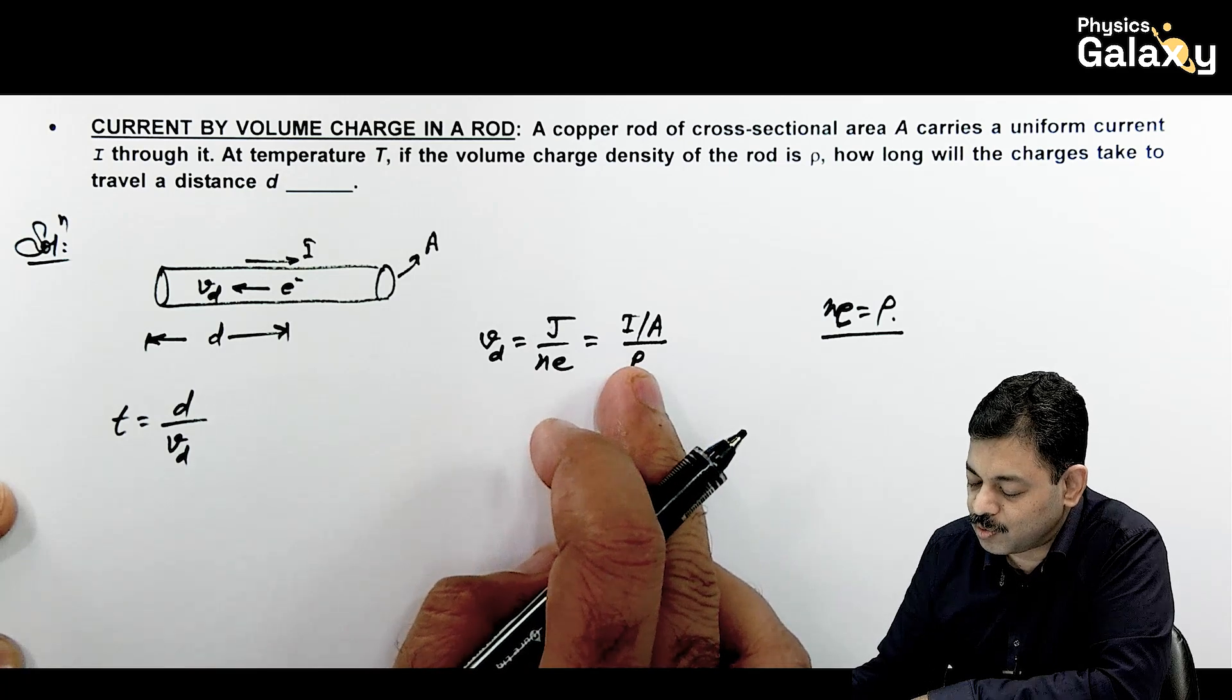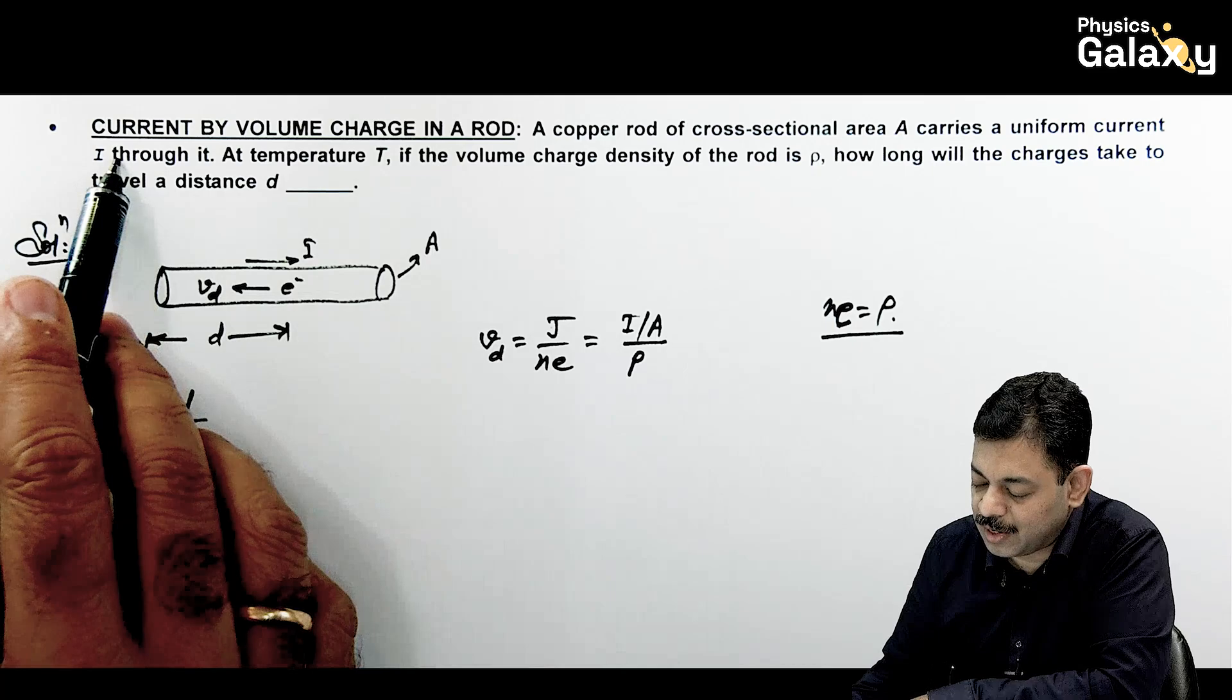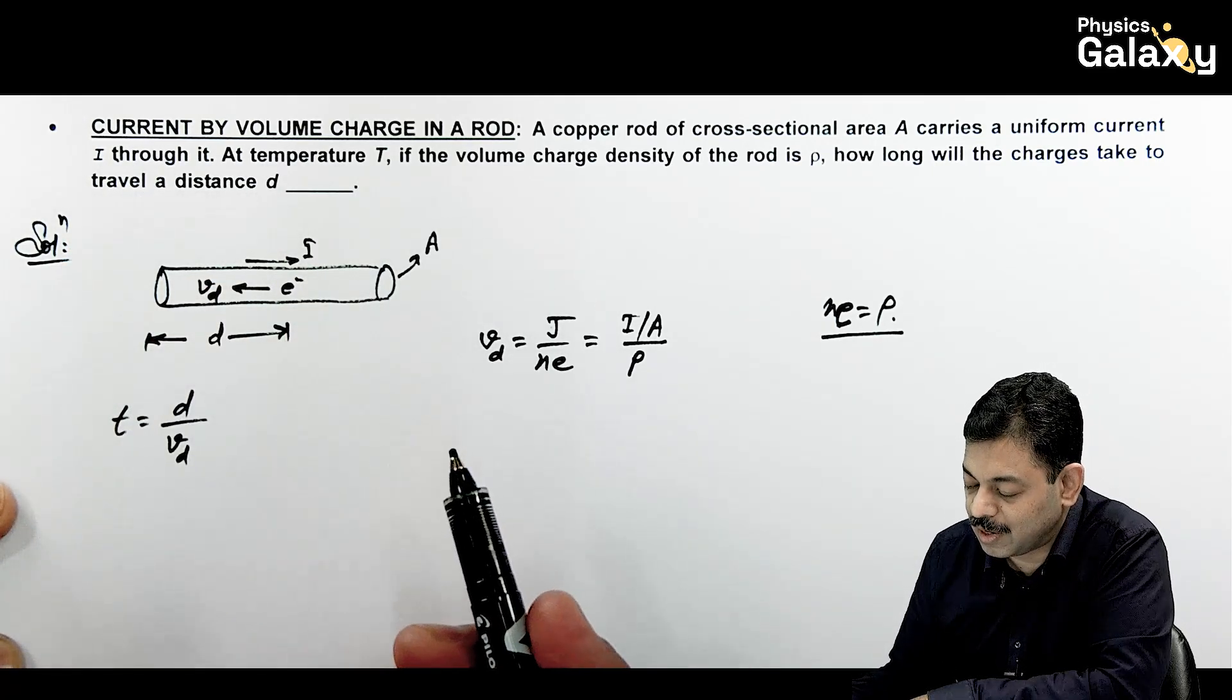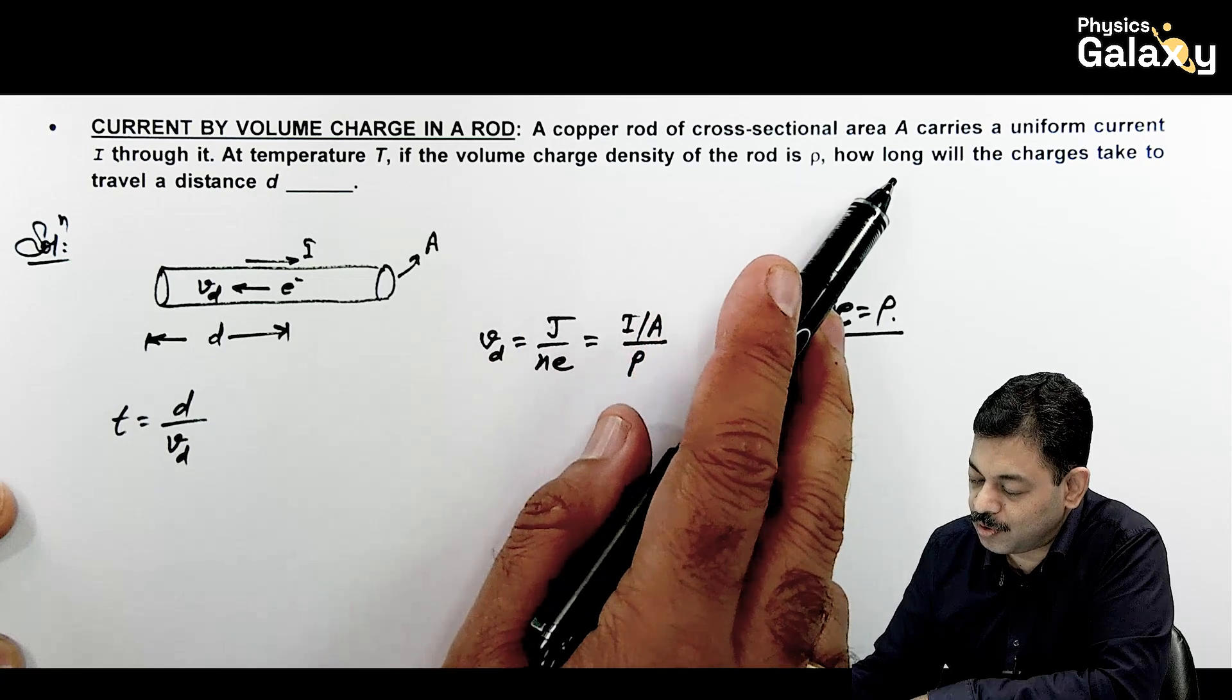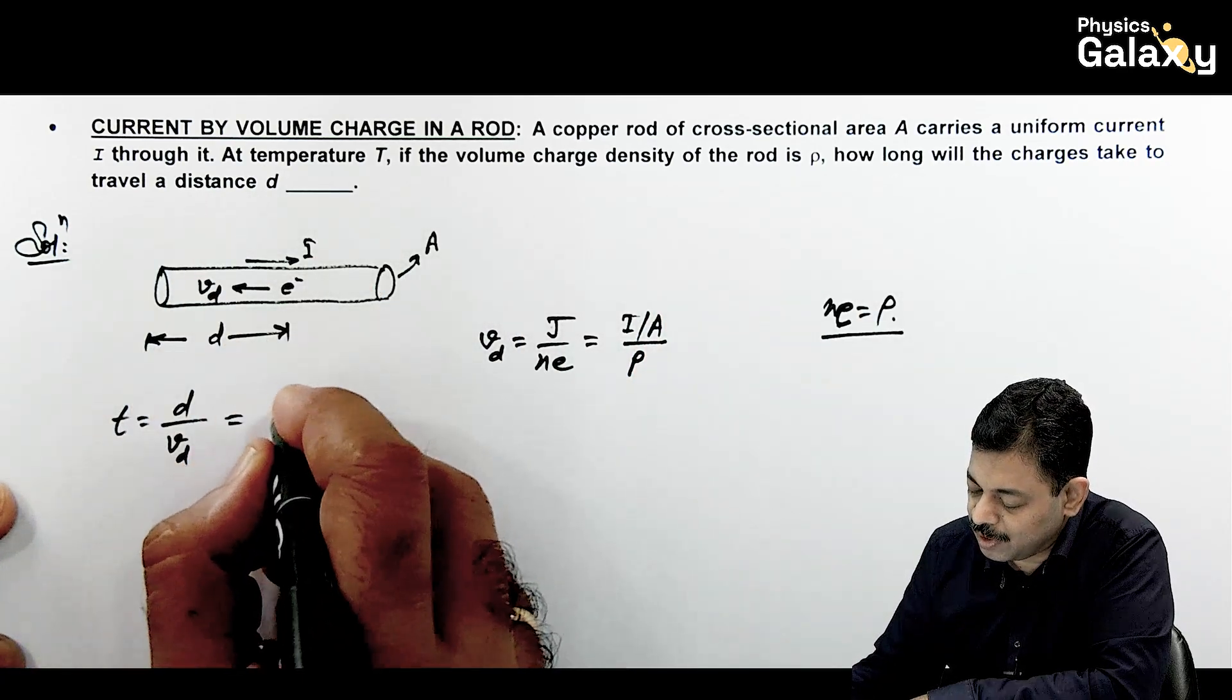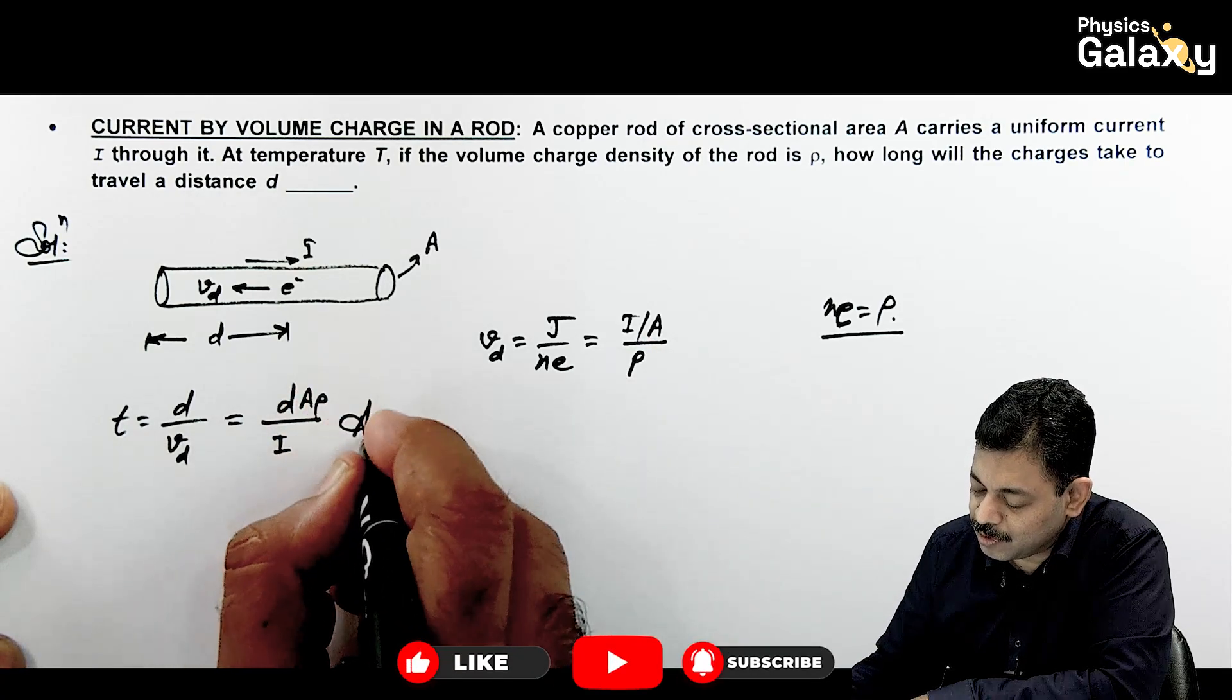In this situation we substitute the value of VD over here. You see here in the question cross sectional area is given, I is given, and temperature has practically no direct use here. So volume charge density is rho. How long will it take the charges to travel a distance? You can write it D divided by, it is I by A rho. That is the answer to this problem.